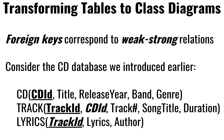Let's take a look at this example with a CD, Track, and Lyrics. We have a CD having a primary key called CD ID. The Track has a primary key and then a foreign key to the CD it belongs to. Finally, we have Lyrics with a track ID, which is both a primary key and a foreign key — notice that it's also in italic.